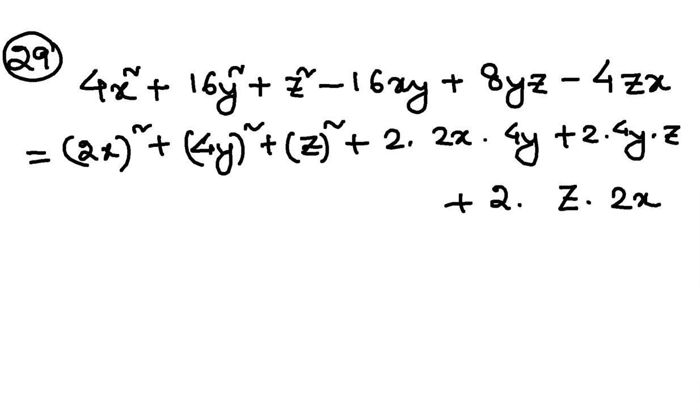plus 2 into c into a. Now, here, this is negative, and this is negative, x, y, and zx, what is common? X. So x will be negative. So minus 2x, minus 2x, and minus 2x, okay?